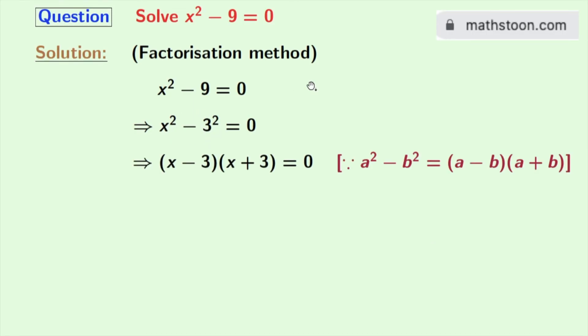Applying this we get (x - 3)(x + 3) = 0. Now we all know that if the product of two numbers is zero, then either of those numbers individually will be zero.